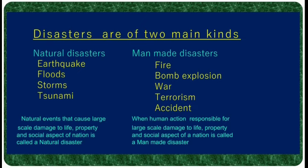Disasters are of two main kinds: natural disasters and man-made disasters. Natural events that cause large-scale damage to life, property and social aspects of a nation are called natural disasters. Earthquakes, floods, storms and tsunami are examples of natural disasters.